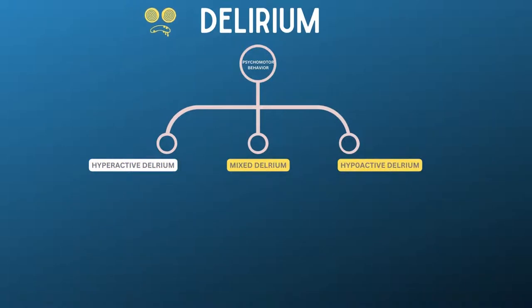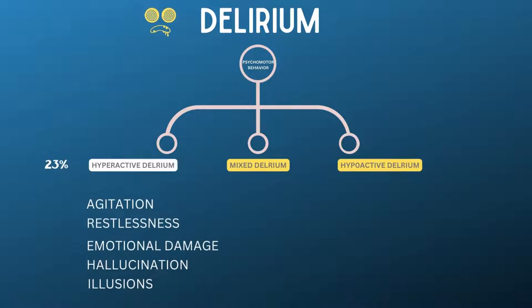First, hyperactive delirium. Hyperactive ICU delirium accounts for approximately 23% of cases. This condition is characterized by agitation, restlessness, emotional instability, and positive psychotic features such as hallucinations and illusions that interfere with treatment. New-onset psychotic symptoms in older adults are unlikely to be a primary mental illness, and they should be investigated for pharmacological or physiological causes.